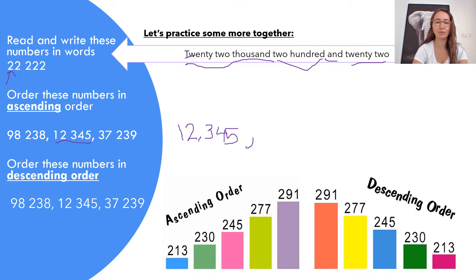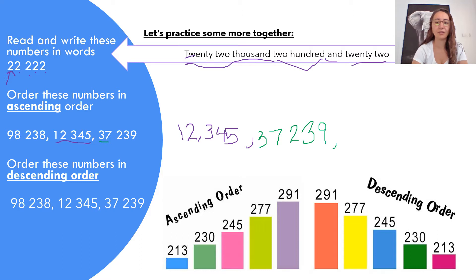Our next number would be 37,000 — because 98 is a higher amount. If we had 37,000 chocolate M&Ms or 98,000 chocolate M&Ms, we would have less with 37,000. So 37,239 is next. And our third and highest amount is 98,238. This is ascending order — we ascend up the stairs, remember that example.